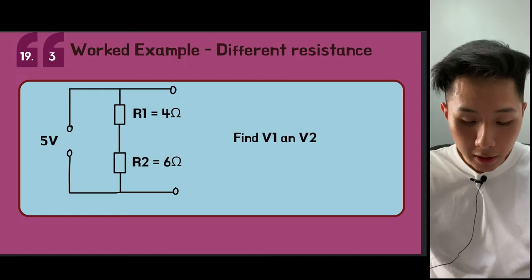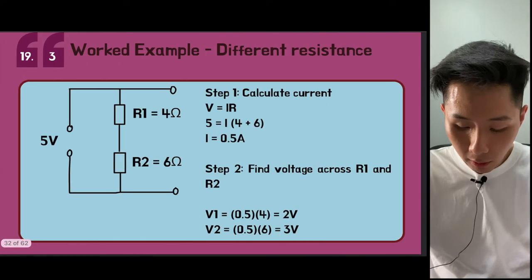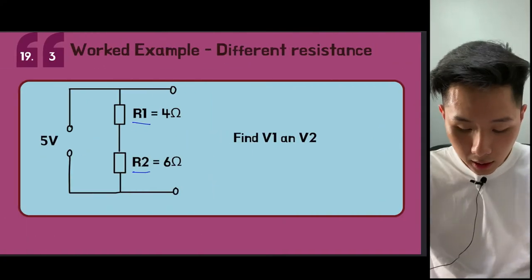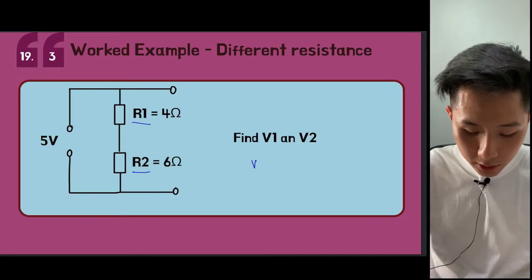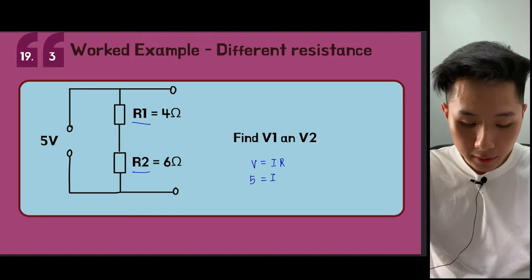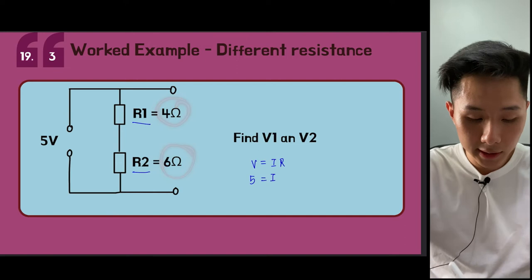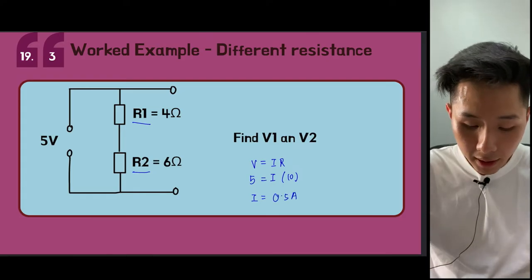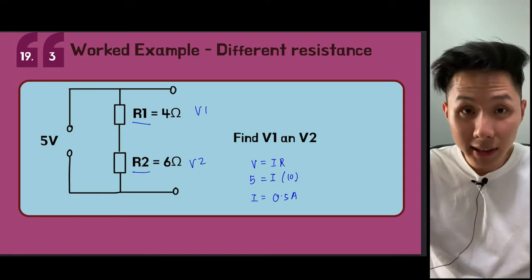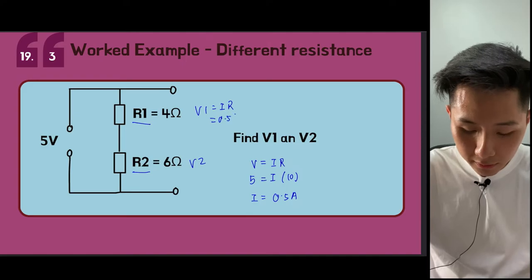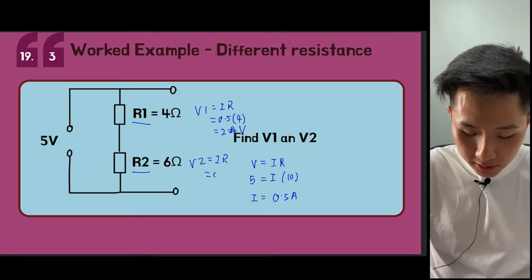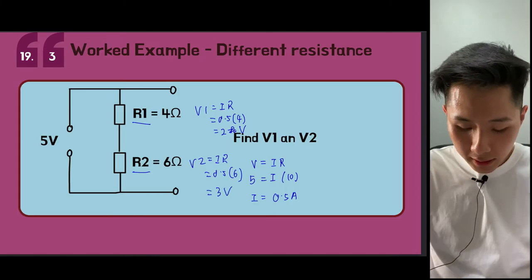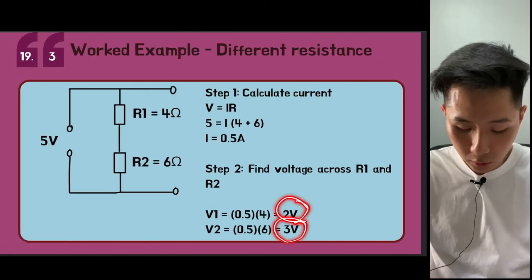Now let's look at an example where the resistances are different. First, find the current using V = IR. With V = 5 V and combined resistance R1 + R2 = 4 + 6 = 10 Ω, the current I = 0.5 A. Then V1 = 0.5 × 4 = 2 V, and V2 = 0.5 × 6 = 3 V. So V1 is 2 V and V2 is 3 V.